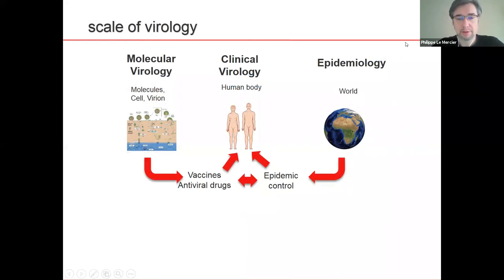I wanted to highlight a little bit the scale of biology. In biology, you have kind of three scales. You have molecular biology, which is what ViralZone is about, which tells about molecules, the cell, the virion, the replication. We have clinical biology, which takes care of a human body or veterinarian biology for animals. And you have epidemiology, which takes care of the scale of the world, how the virus goes back and forth, and epidemic controls.